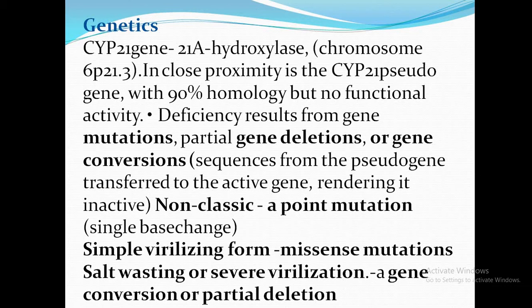In the simple virilizing form there are missense mutations, and in the salt-wasting or severe virilization form, gene conversion or partial deletion may be the cause. To summarize: in the classic form it could be due to mutation, gene deletion, or gene conversion; in the non-classical form, a point mutation; in the simple virilizing form, a missense mutation; and in salt wasting or severe virilization, gene conversion or partial deletion.